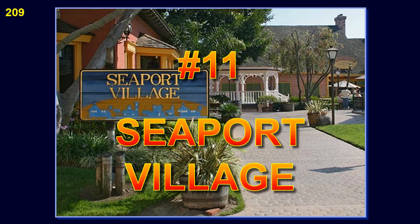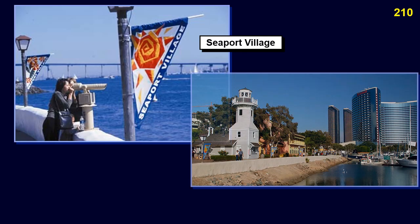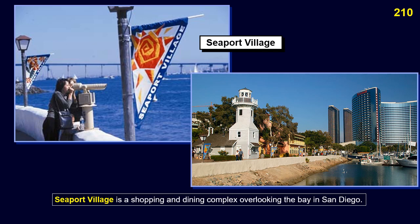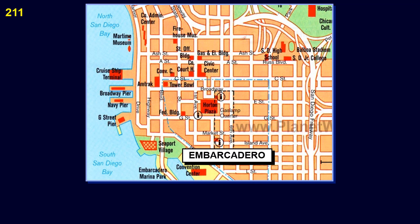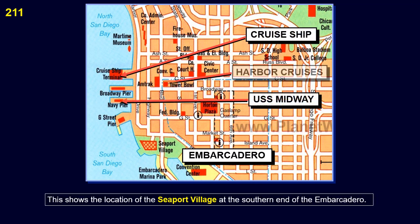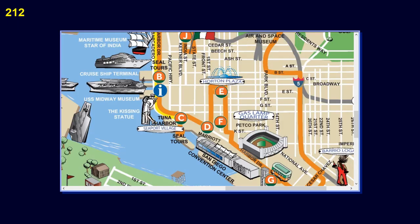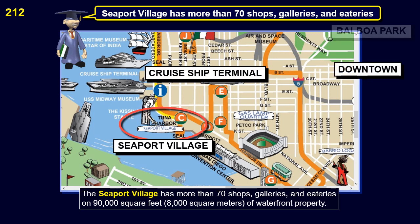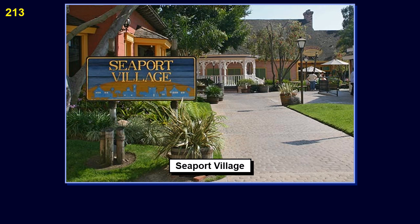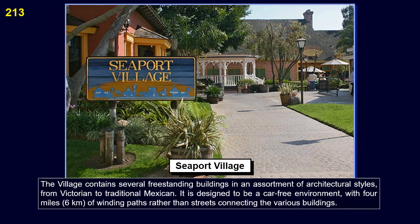Number 11: Seaport Village. Seaport Village is a shopping and dining complex overlooking the bay in San Diego. This shows the location of Seaport Village at the southern end of the Embarcadero. The Seaport Village has more than 70 shops, galleries, and eateries on 90,000 square feet (8,000 square meters) of waterfront property. The village contains several freestanding buildings in an assortment of architectural styles, from Victorian to traditional Mexican. It is designed to be a car-free environment, with 4 miles of winding paths rather than streets connecting the various buildings.